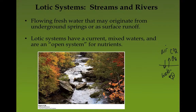Let's take lotic systems first — streams and rivers. These are important because the water is moving. It originates from either runoff or from springs, and there's a lot of mixing and gas exchange at the interface because of the moving water, similar to bubbling in an aquarium. They're also considered an open system because leaves and organisms can fall into them, bringing a lot of nutrient flow and mixing. That makes them able to deal with pollution a little bit better than a system that's not moving.